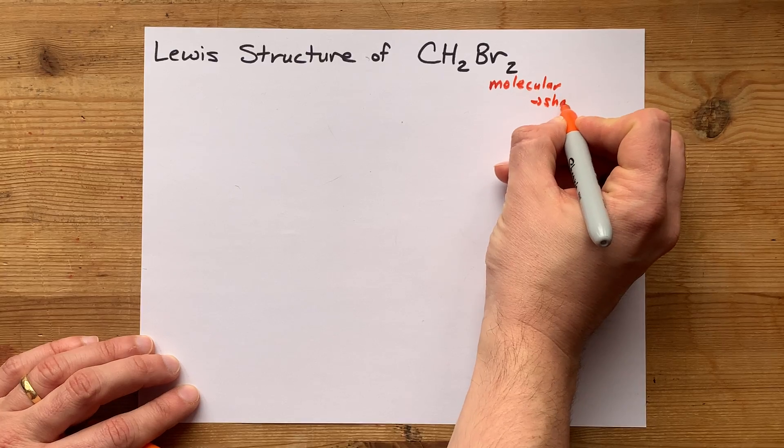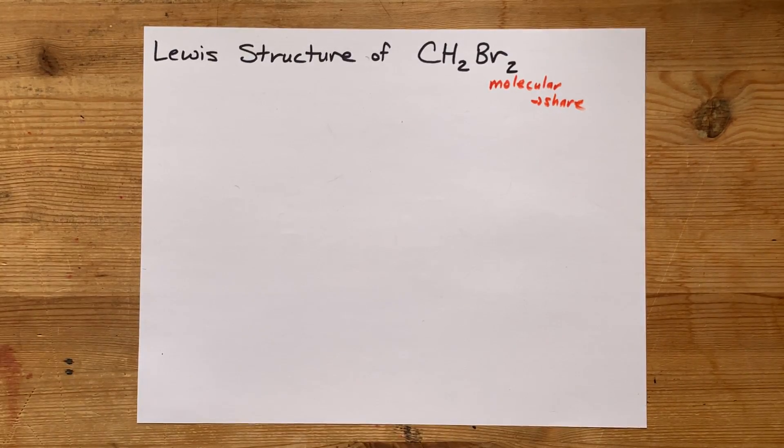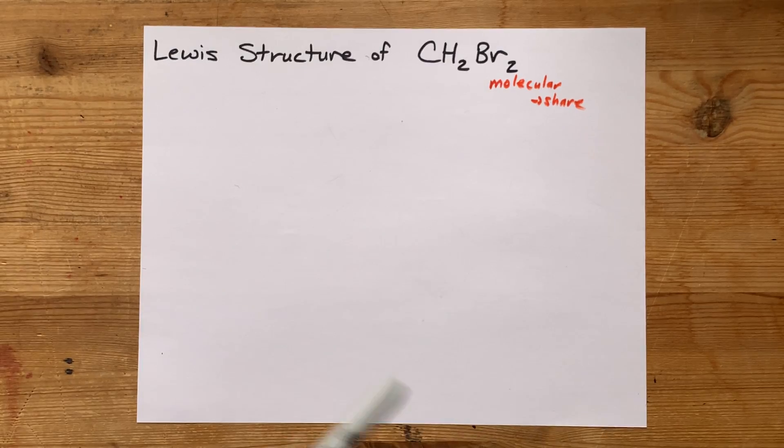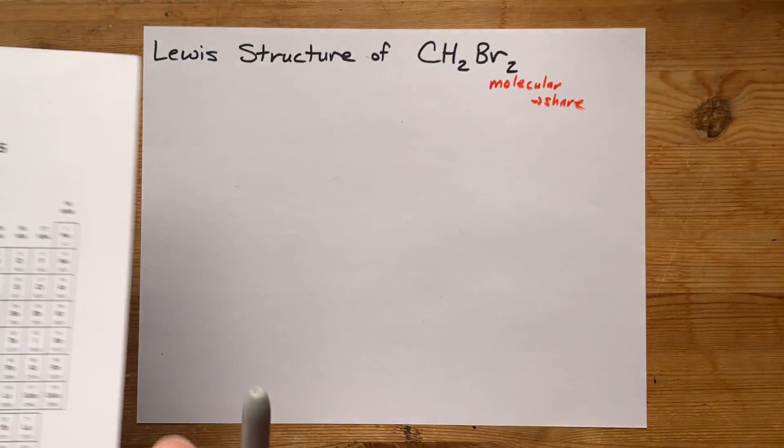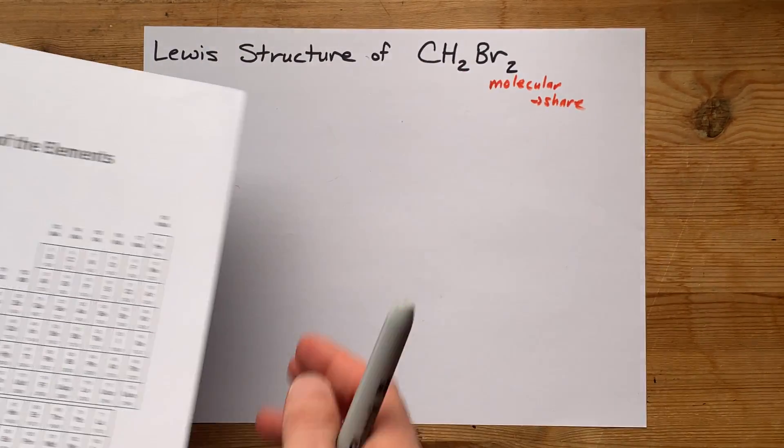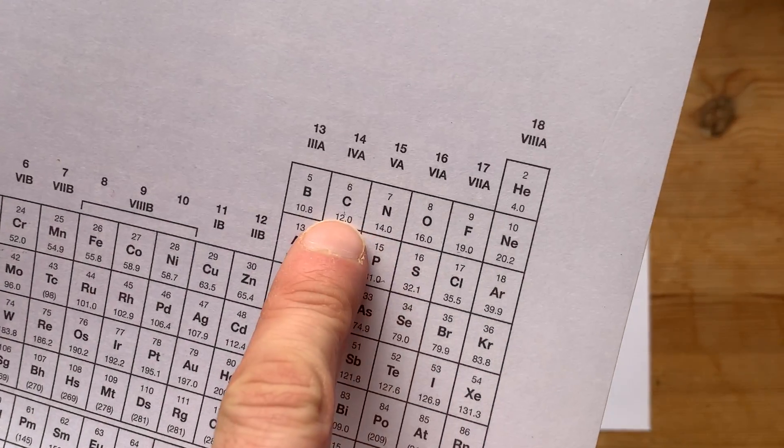The covalent bonds mean they are sharing electrons, not a transfer of electrons like you have in an ionic one. Let's figure out how many electrons we're even dealing with here.